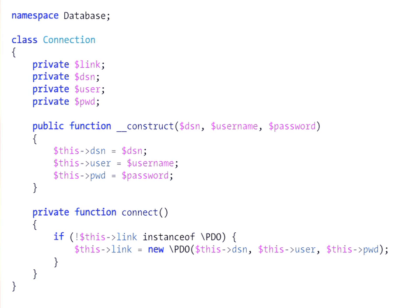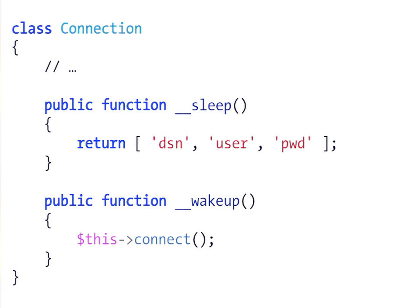This Connection object is stateful, containing a PDO instance which can't be serialized. So if you want to serialize it, you implement the __sleep function. PHP calls it when you use the serialize function. In this case, you tell PHP to serialize only the DSN, user, and password properties — skipping the link property that contains the PDO object.